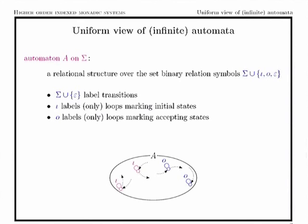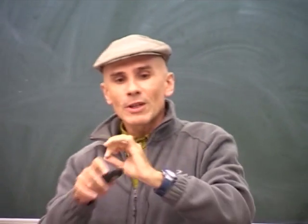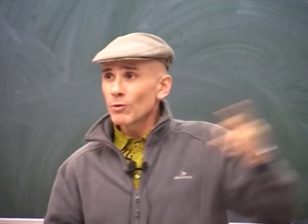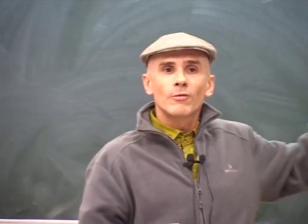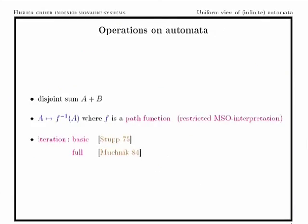We use almost unary symbols — we put loops to indicate the initial states and the final states. These loops are not used when we are interested in paths concerning the language accepted by automata, but we use these loops for other constructions on automata. So what constructions will we make on automata — what kind of operations do we need?